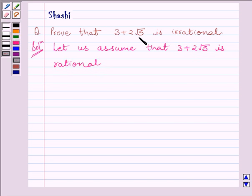Put 3 plus 2 root 5 equal to A upon B, where A and B are co-prime such that B is not equal to 0.